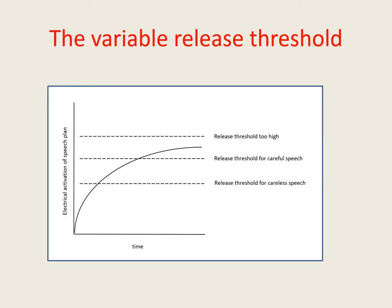In this graph, the curved line represents the level of electrical activation of a speech plan for a word. You can see how it rises as time goes on up to a maximum and then levels out. The dotted lines represent three different possible settings of the release threshold. The level at which the release threshold is set varies from word to word, going up and down depending on how much the speaker feels the need to say that word clearly and accurately. If the speaker doesn't care about a word, the release threshold will be set at a low level, enabling motor execution even when the speech plan is not very highly electrically activated.